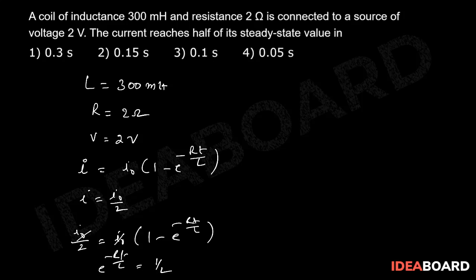Therefore e power RT by L equal to 2. Then RT by L equal to ln 2, that equal to 0.693. Therefore T equal to 0.693 into L divided by R.